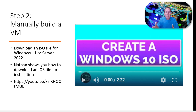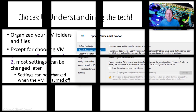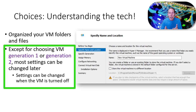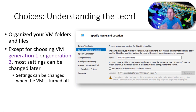Besides your switch, you need an ISO to build a Windows 10, Windows 11, or Server 2022 virtual machine. If you're not familiar with how to get an ISO, we have a Create Windows 10 ISO video on the channel. When walking through the wizard to create a virtual machine, most choices can be changed later — but one thing you cannot change: if you choose generation one or generation two, you're committed to that generation and cannot change it without wiping everything out and starting again.